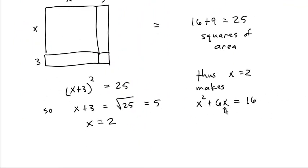You look at x squared plus 6x equals 16. You get two squared plus six times two, two squared is four, six times two is 12, 12 plus four is 16.